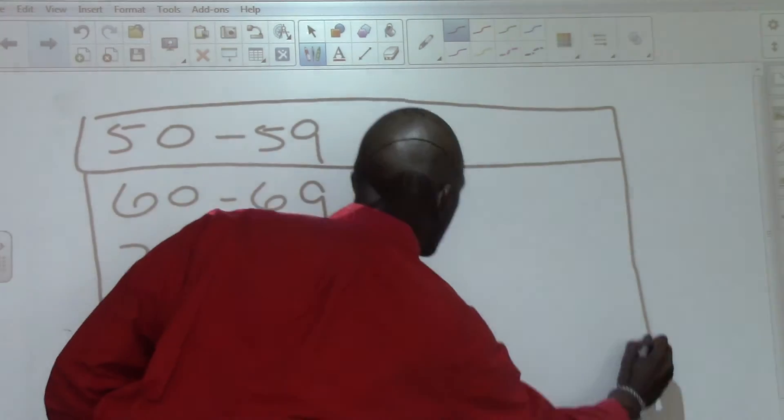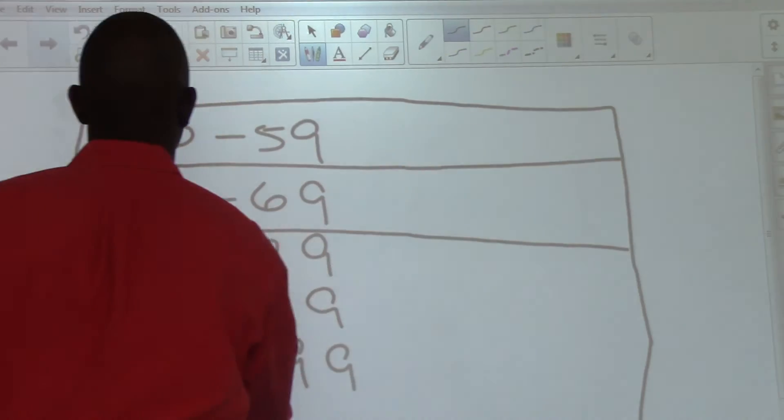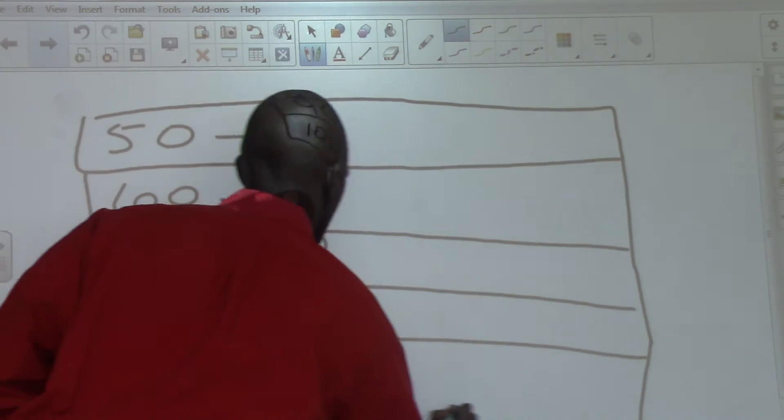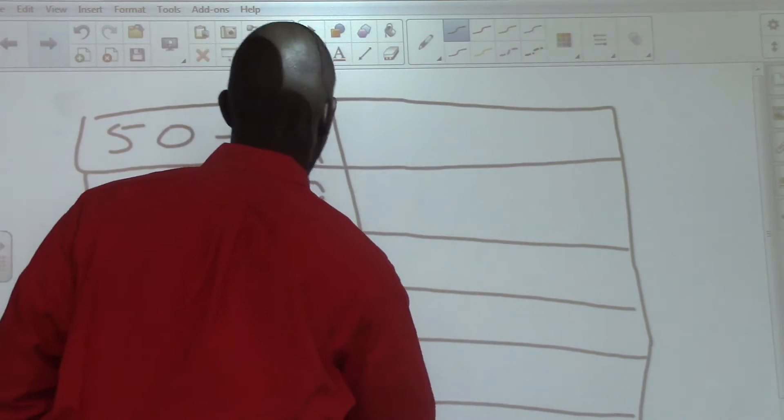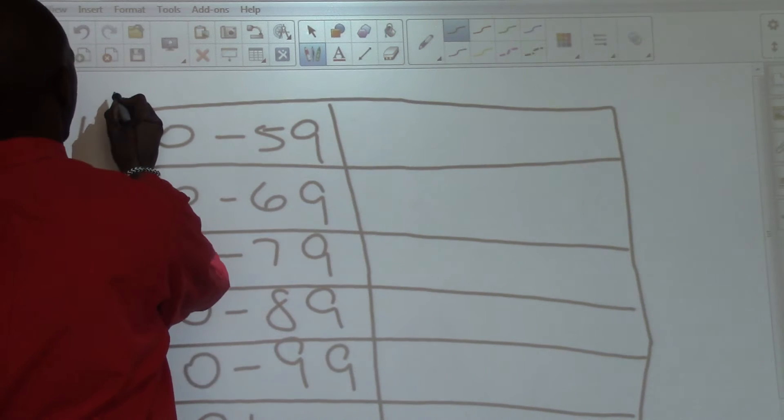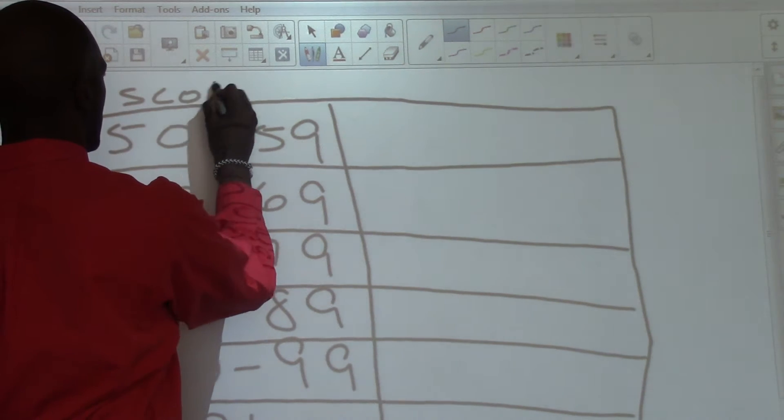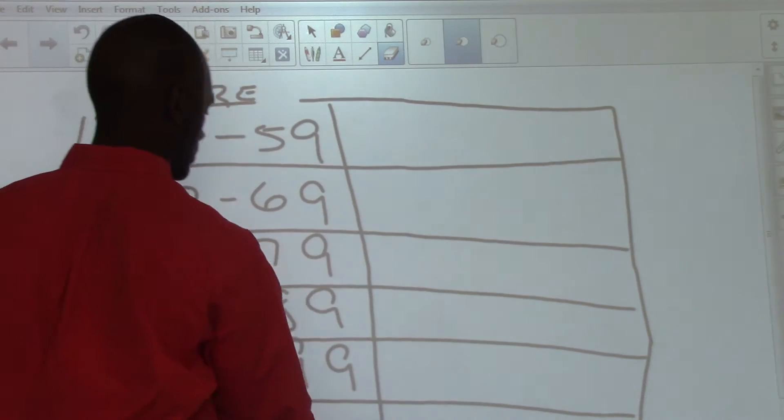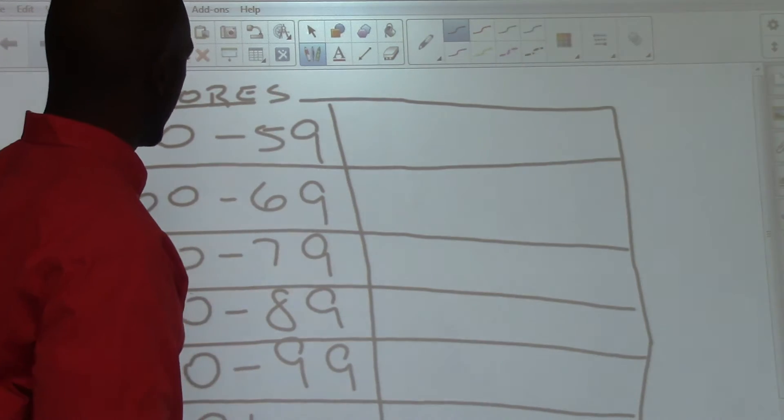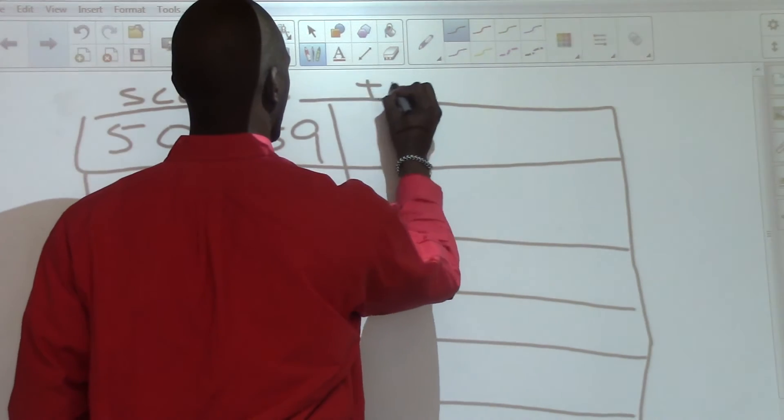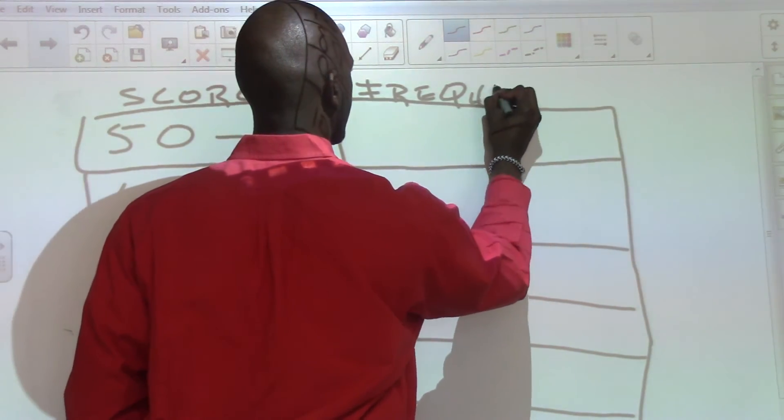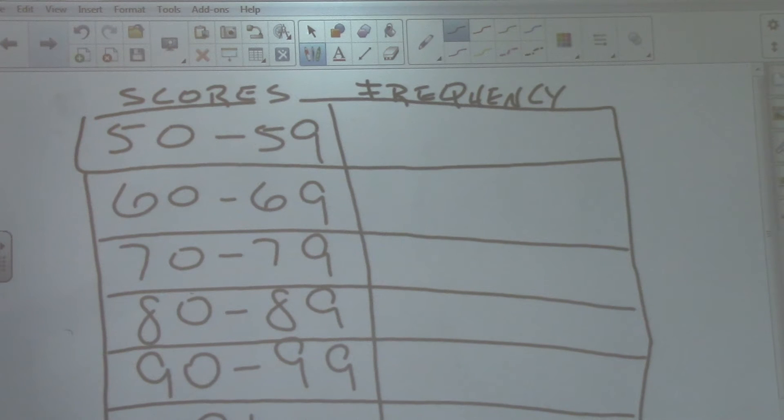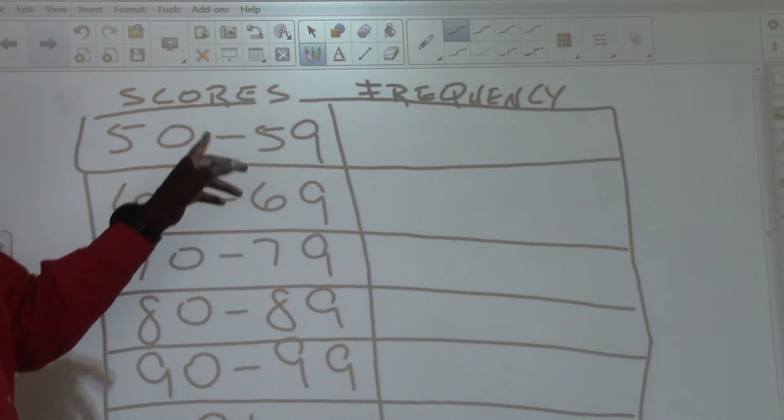We're going to create a table. We're going to call the 50 to 59 column scores. And we want to know the frequency. We're going to call the last column frequency. We've already discussed creating tally marks for frequency tables, so I'm not going to create the tally marks.